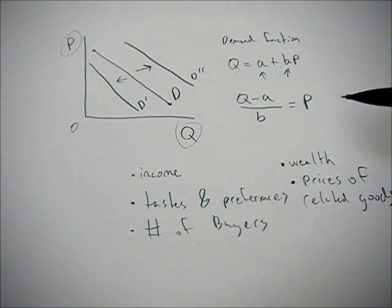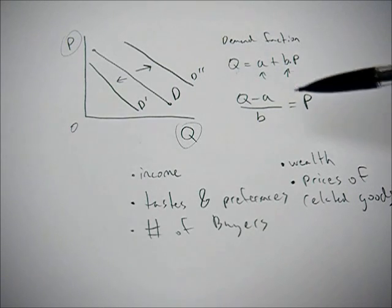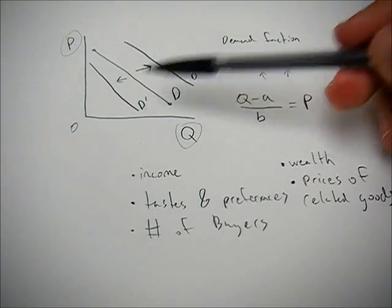Or prices of related goods. All of these things are going to be exogenous to the model because if they change, we have to shift this curve.